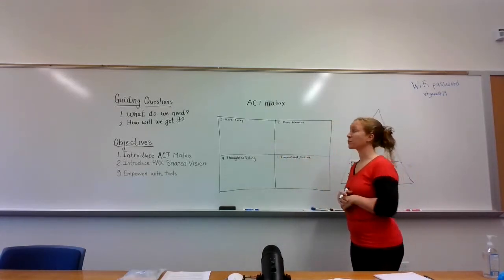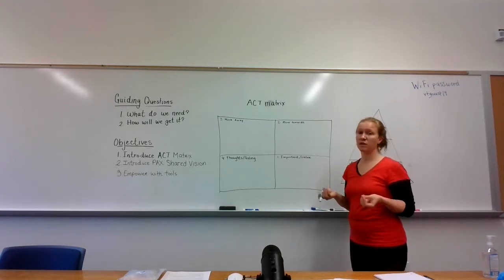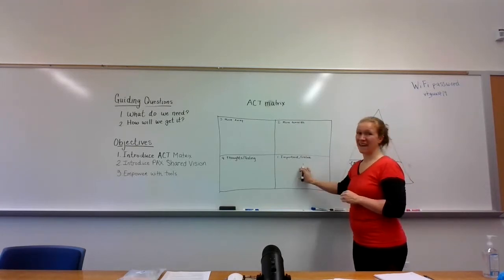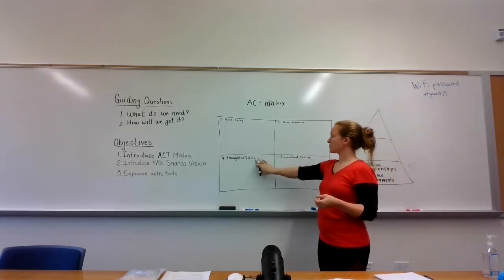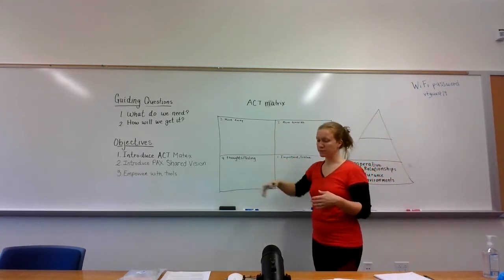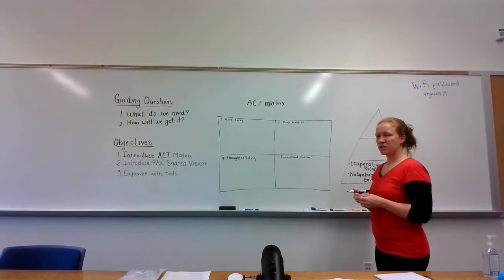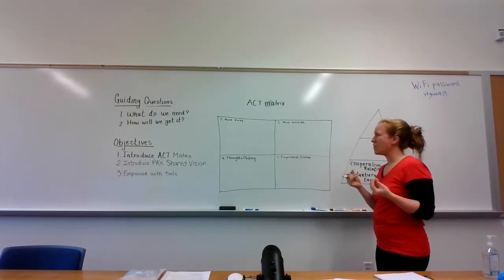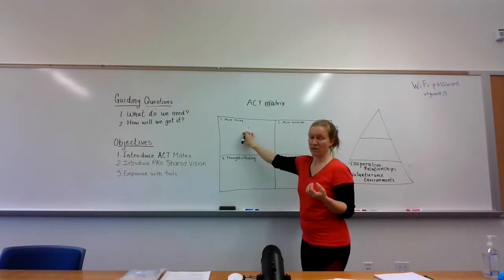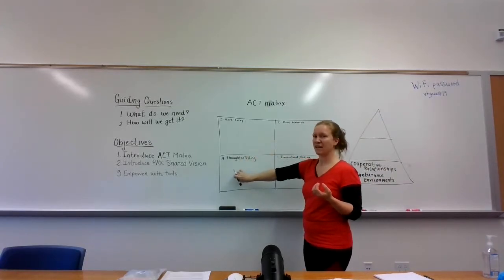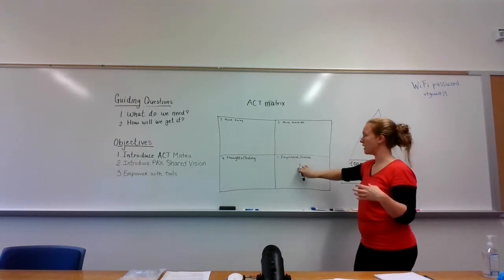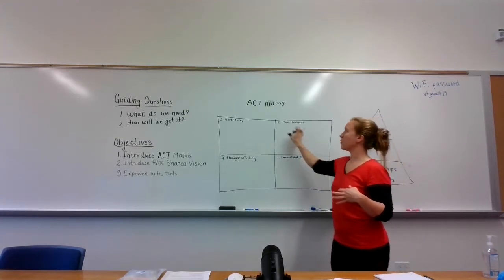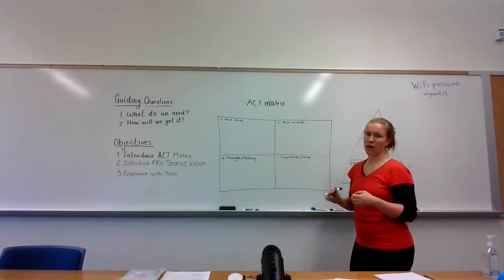Now move to the third quadrant, the top left corner — write the number three and the words 'move away.' In this box we gather information about the things that happen in our lives that get in the way and draw us away from the things that are important to us. Then in the bottom left quadrant, we ask about those thoughts and feelings that arise when we're doing things that pull us away from our values — the ones we can notice and use to help us stay aligned. You can see we start in the bottom right and go counterclockwise, which takes us right back to the beginning.